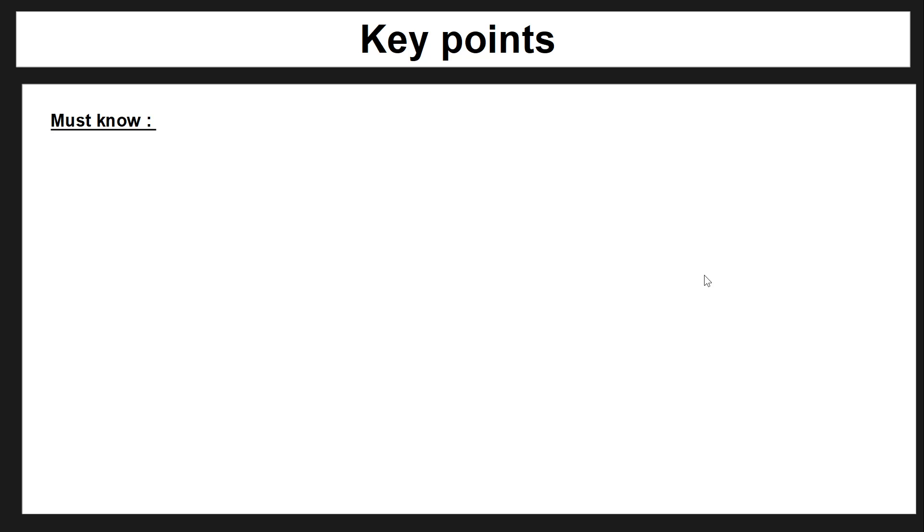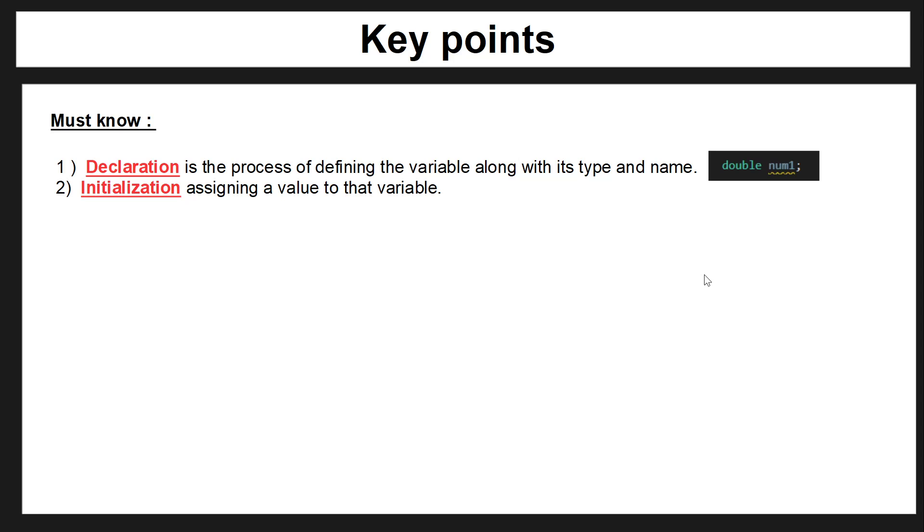What you should know already is these two keywords. When you declare a variable, you're giving the variable's name and the data type and what this does is in the Java memory it saves this space. It doesn't give a value but it saves this space for that value in memory. Then to initialize, you're actually giving that value to that variable and putting that value into that memory space.